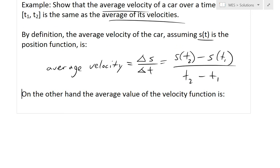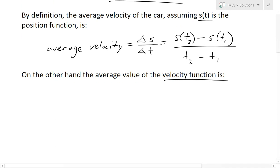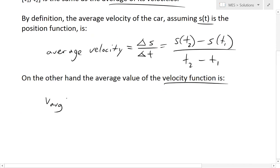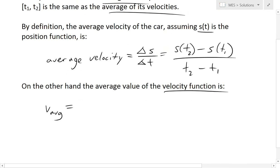But on the other hand, the average value of the velocity function, so if we were given the velocity function, let's say v average, so we're going to be averaging of the velocities, not using this definition, just averaging it out.